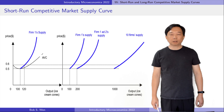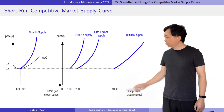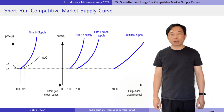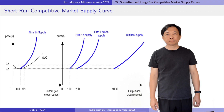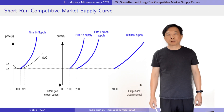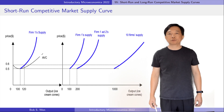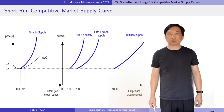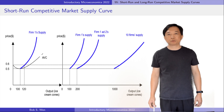Consequently, the market supply is 1,000 ice cream cones in the right graph. At $0.60, each ice cream firm supplies 120 ice cream cones, so the market supply is equal to 120 times 10, that is 1,200 ice cream cones.